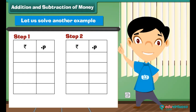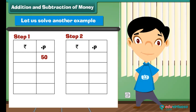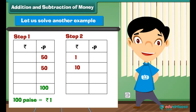Let us solve another example. What is the sum of 10 rupees 50 paise and 15 rupees 50 paise? Step 1: Write the numbers in the correct column. Step 2: Add the numbers in the paise column. 50 plus 50 equals 100 paise. But we know that 100 paise is equal to 1 rupee, so we write two zeros below the paise column. Step 3: Add the numbers in the rupees column. 1 plus 10 plus 15 equals 26 rupees. Write 26 under the rupees column.